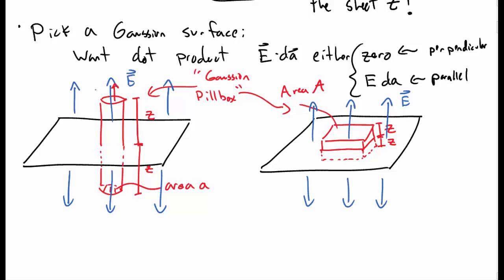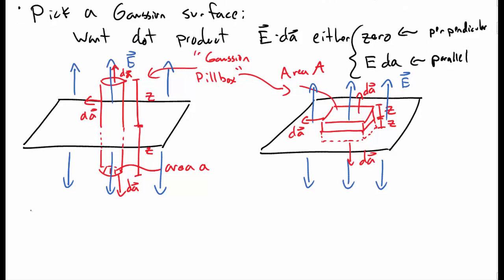And it's also useful to show the direction of dA, the perpendicular area vector, on each of these surfaces. So, for the tube, and then for the box, dA points horizontally outwards along the x and y directions, and then top and bottom it points up and down.